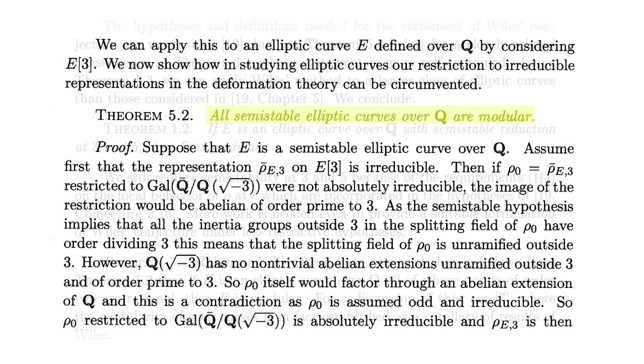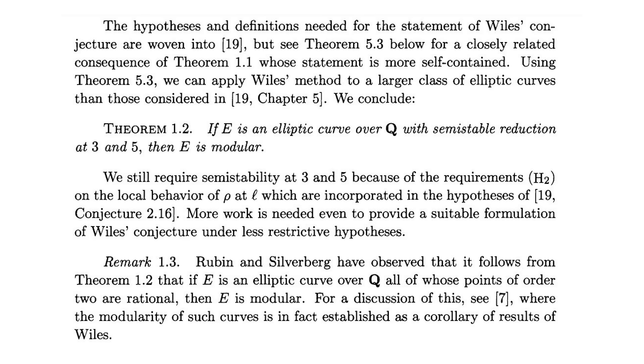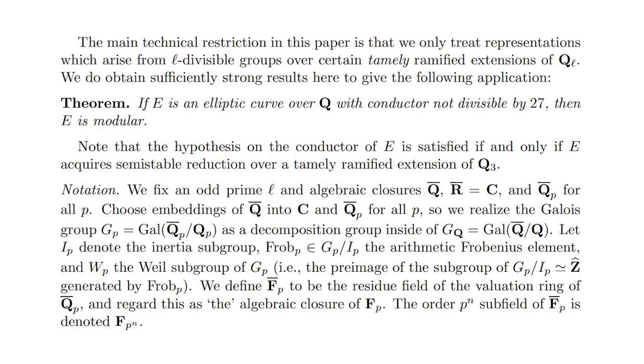Slowly, slowly, in the years after, people started removing conditions on the theorem. So the Taniyama-Shimura conjecture was then proven for all curves that were semi-stable at 2 and 3. Then it was proven for all curves satisfying an even weaker technical condition.